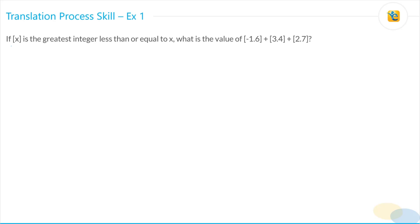If bracket x is the greatest integer less than or equal to x. Now, this is the definition for this operation of bracket x and there are two parts to it. One is that it's the greatest integer. Second is that it's less than or equal to x.